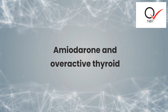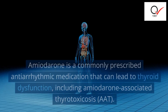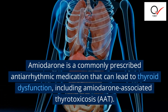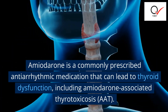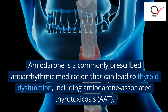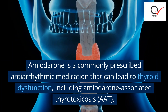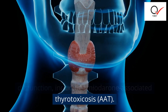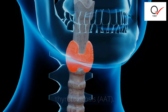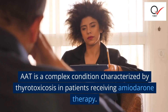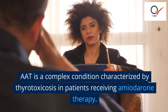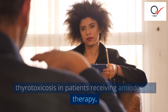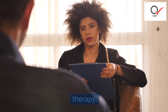Amiodarone and Overactive Thyroid. Amiodarone is a commonly prescribed antiarrhythmic medication that can lead to thyroid dysfunction, including amiodarone-associated thyrotoxicosis, AAT. AAT is a complex condition characterized by thyrotoxicosis in patients receiving amiodarone therapy.